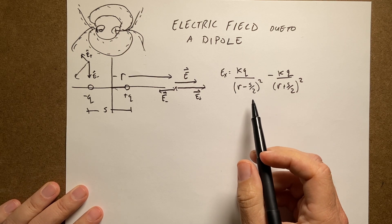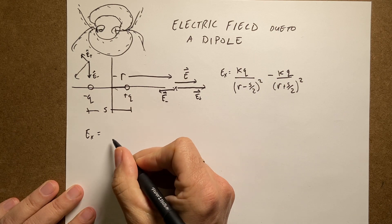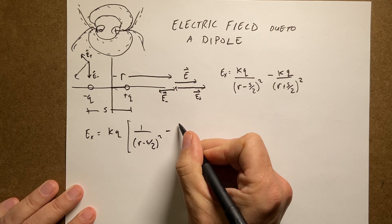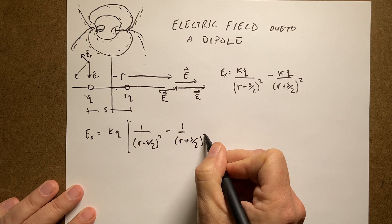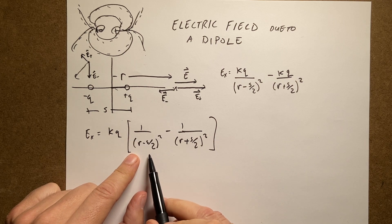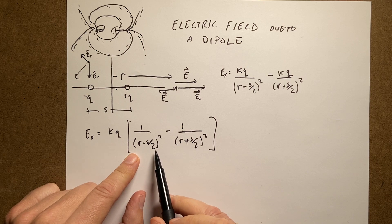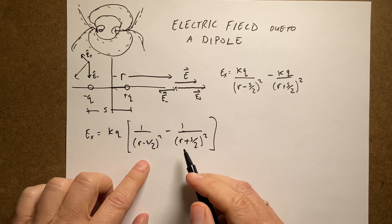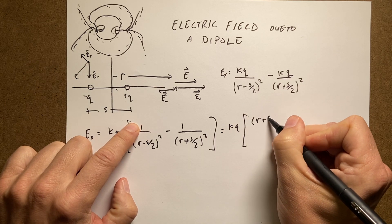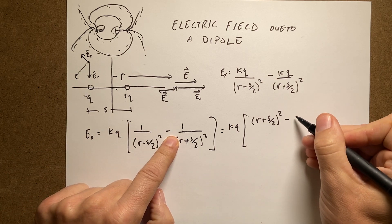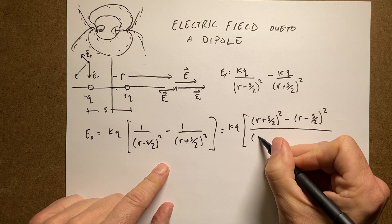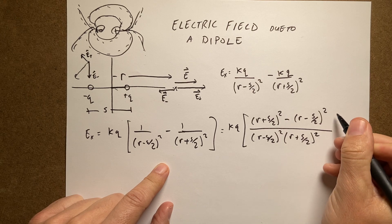Now let's see if we can get a simplified version of this. I'm going to write E_x as kq times — because that factors out — 1 over (r minus s/2)² minus 1 over (r plus s/2)². Now I want to get a common denominator. So if I multiply the first fraction by (r plus s/2)² over (r plus s/2)², and the second by (r minus s/2)² over (r minus s/2)², I get a common denominator. So the numerator has (r plus s/2)² minus (r minus s/2)².